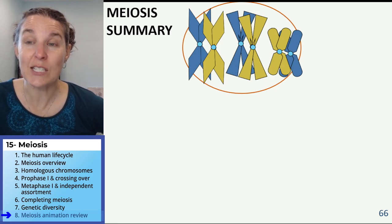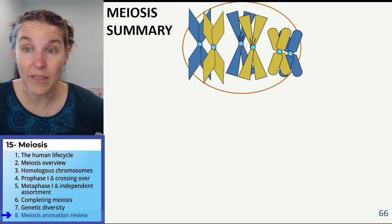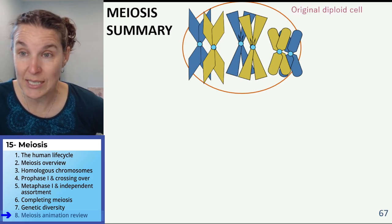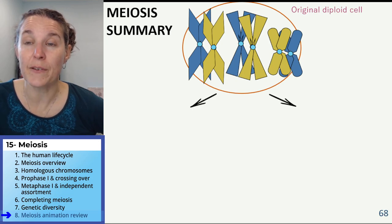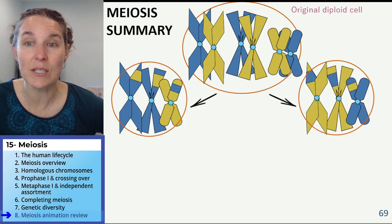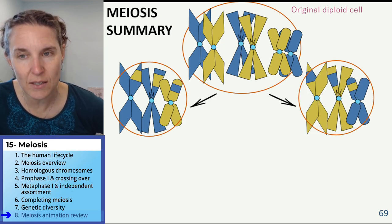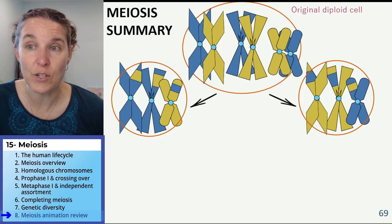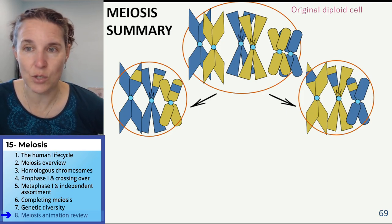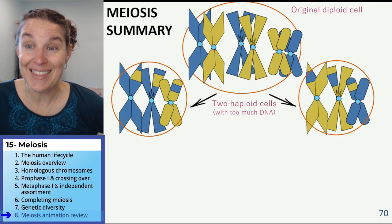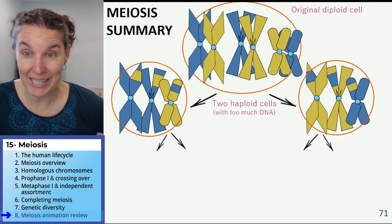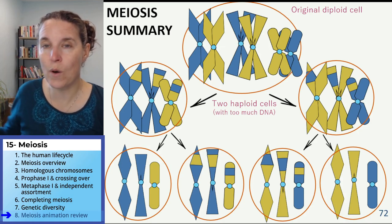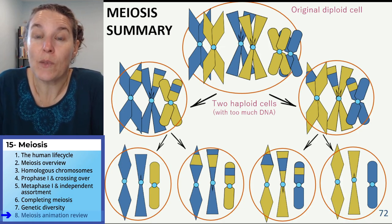Let's do a summary. This is what we started with — pairs of homologues, a diploid cell. After meiosis one we ended up with two haploid cells. Convince yourself: six chromosomes in the first diploid cell, only three in the two daughter cells. Then we split again and end up with four unique gametes.